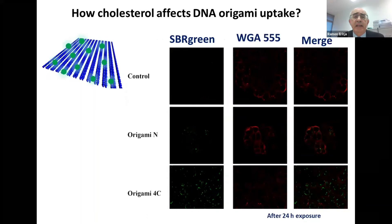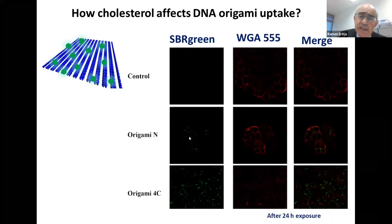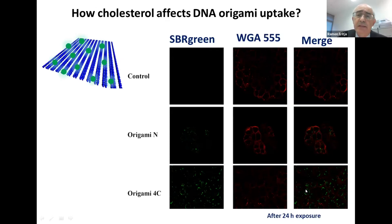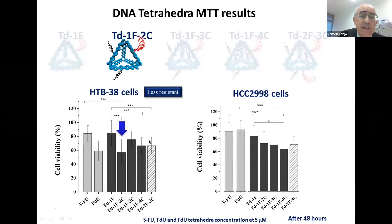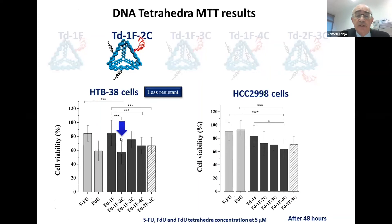For the large origami, entry is a little more difficult, but we confirmed by SYBR Green labeling that cells have origamis inside. When four cholesterols are added, cell uptake is very high. Studying the antiproliferative activity, we saw that for the tetrahedron the best activity was achieved with two cholesterols and one drug molecule. Notably, adding more FDU decamers — two of them — does not improve the result, so it is better to have a smaller number of oligonucleotides.